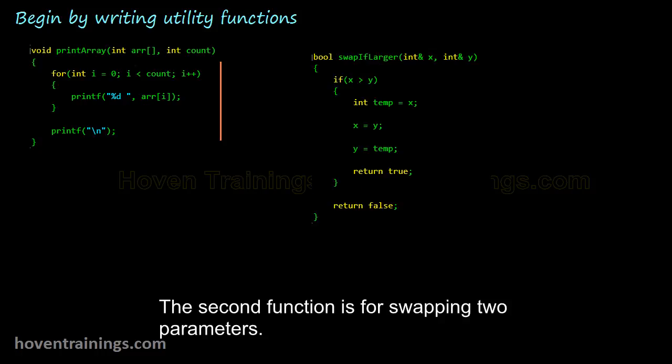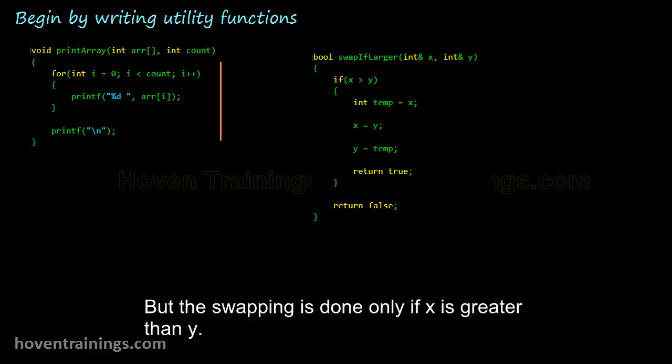The second function is for swapping two parameters. But the swapping is done only if x is greater than y. The function returns true if the swapping was done, and it returns false if swapping was not done.